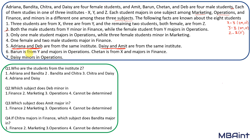Barun is in Y and majors in operations — we know he is male from the first statement. Chetan is from X and his major is in finance. These are static pieces of information. Daisy minors in operations — also static. We should always look for static information first and put it directly into the table.